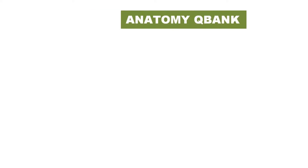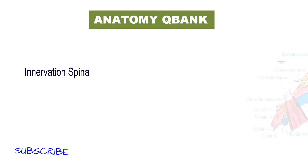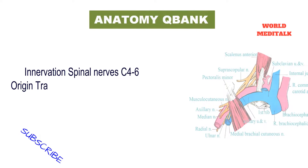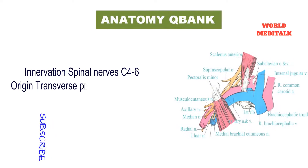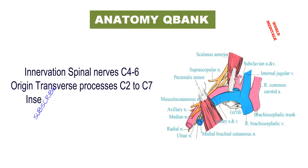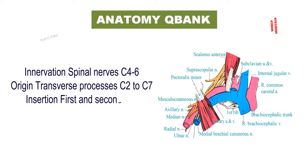They receive innervation from spinal nerves cervical 4 to 6. Origin is from the transverse processes of cervical 2 to cervical 7; insertion is into the first and second rib.